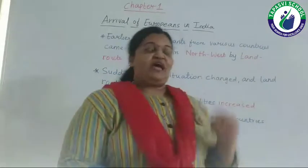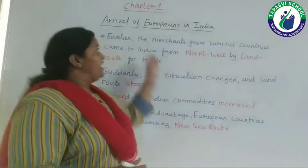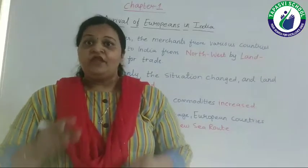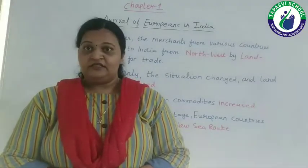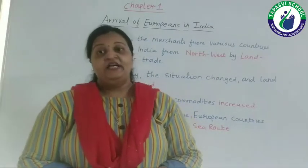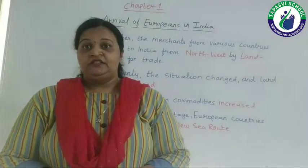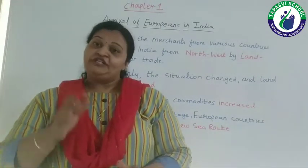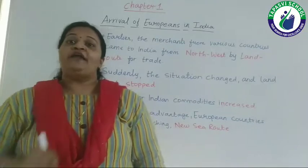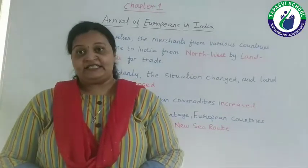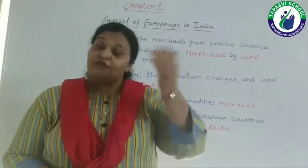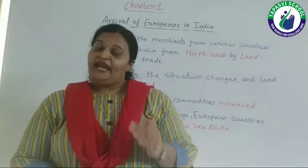In this chapter, we are going to learn about the arrival of Europeans in India — how the Europeans came to India and how they became our rulers. We know well that in history we had 200 years of slavery under the Britishers. Britishers became our rulers and we had to suffer 200 years of slavery in their hands. So let's learn how they came to India and what was the reason they came to India.